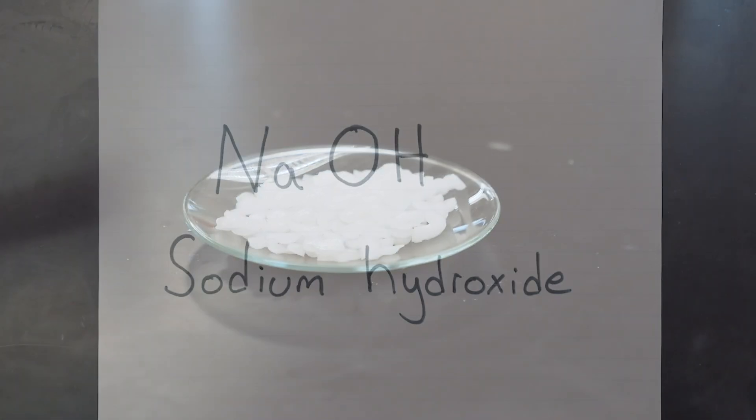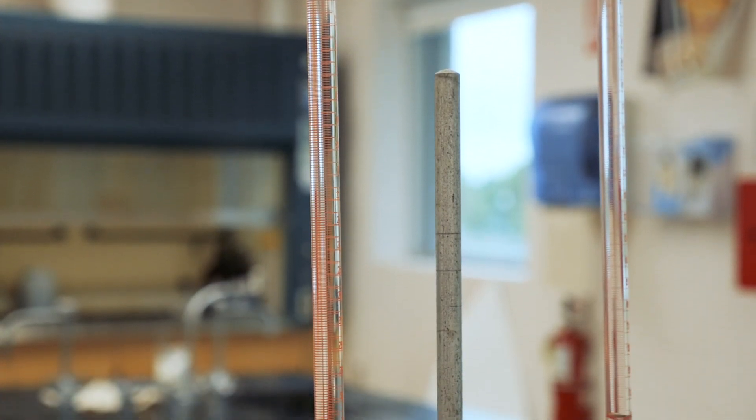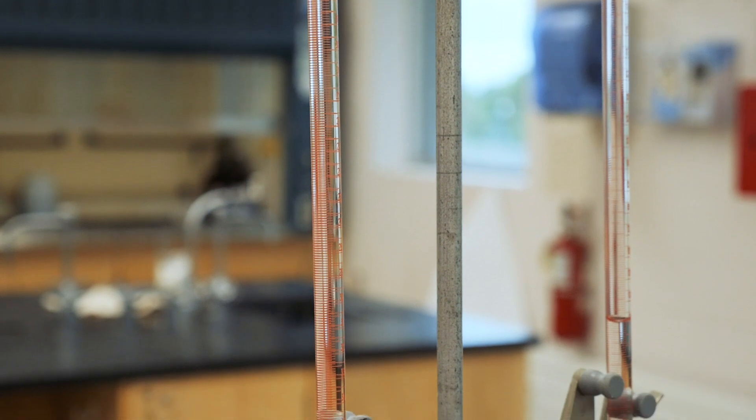Typically what we do is make a solution of sodium hydroxide that's close to what we want, and then measure its concentration very accurately against a standard, doing what's known as a titration.